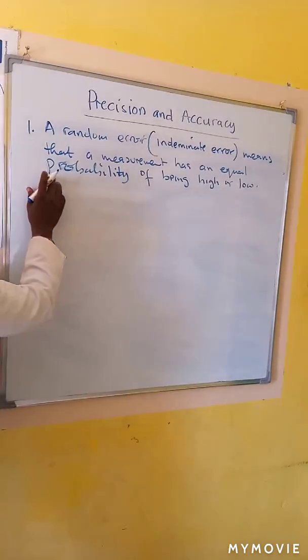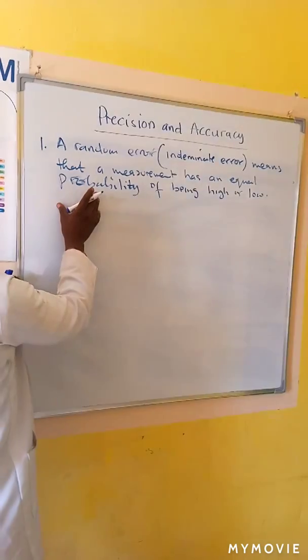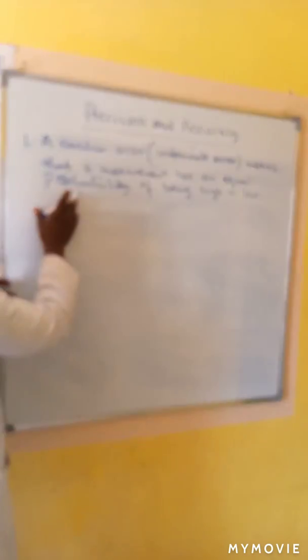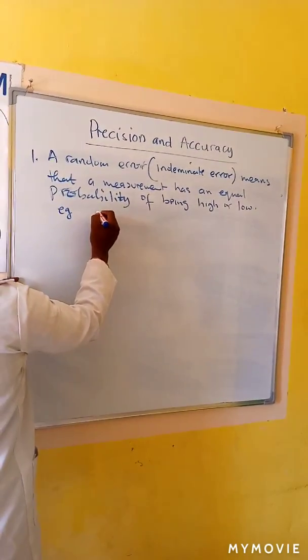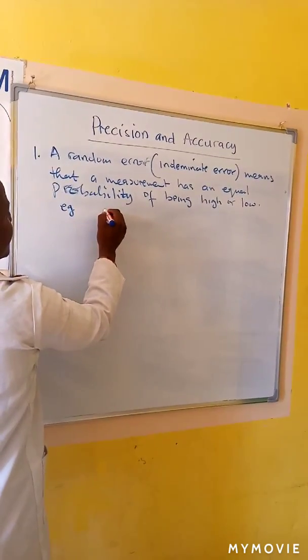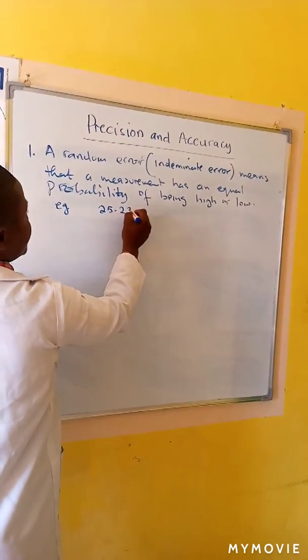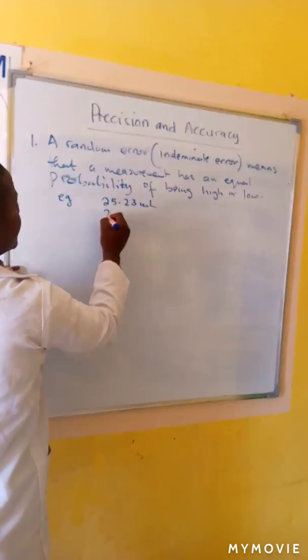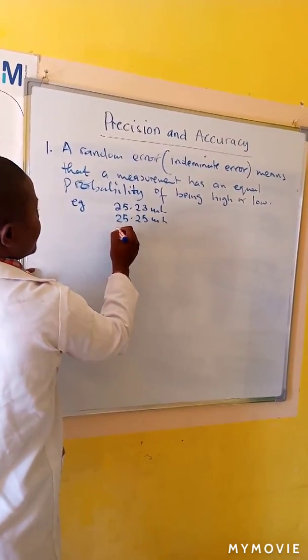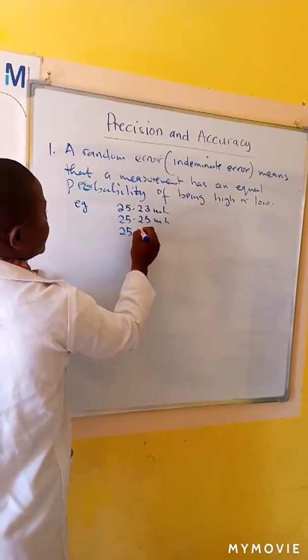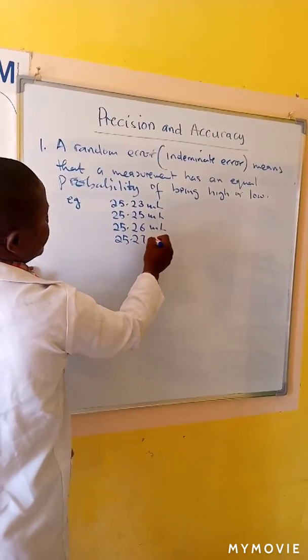This error always occurs in estimating the last digit of a measurement. For example, when 5 people measure the volume as 25.23 ml, 25.25 ml, 25.26 ml, then 25.27 ml.